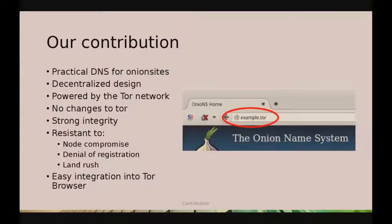So this is our contribution. We have made a practical DNS for Onion sites. It has a decentralized design, powered by the existing Tor network — we're recycling that infrastructure for our own purposes. It requires no changes to the Tor binary, has strong integrity guarantees, and is resistant to node compromise, denial of registration, and land rush attacks. By dropping a few files into the Tor browser, it works out of the box at startup.